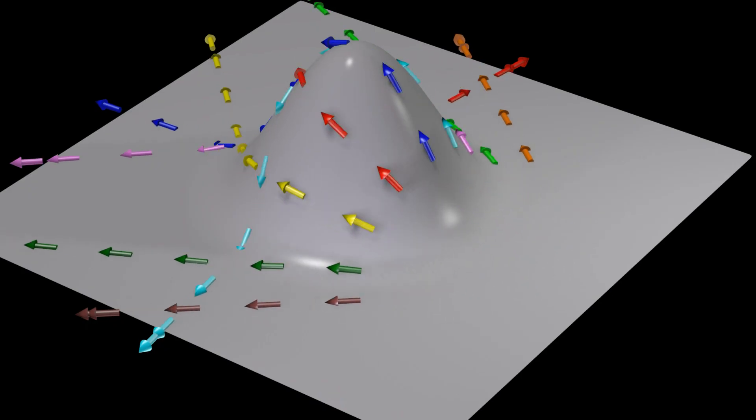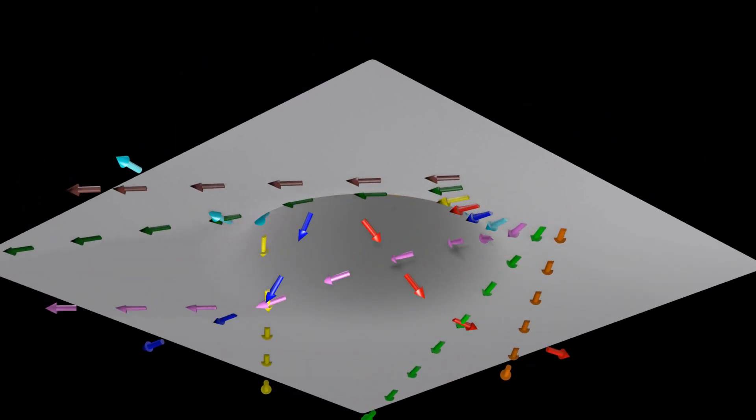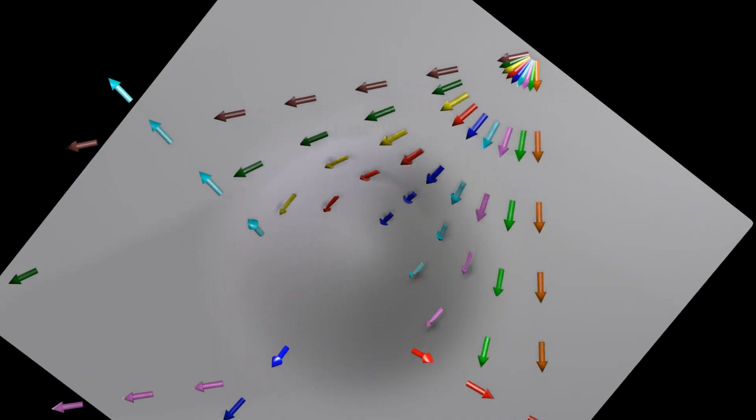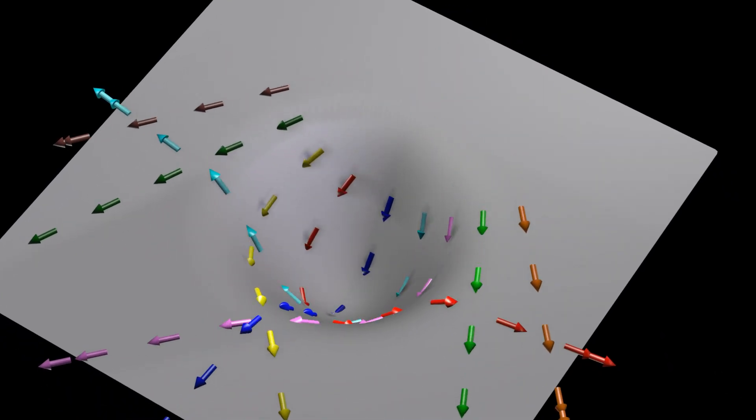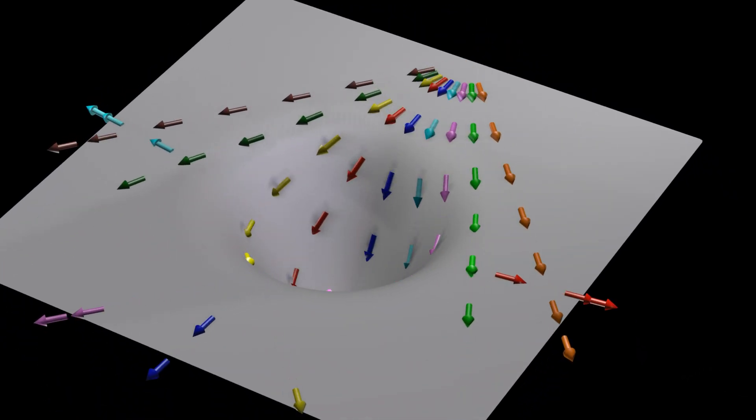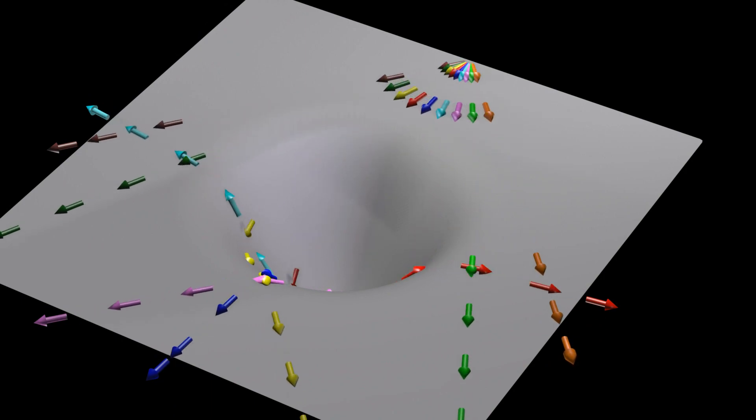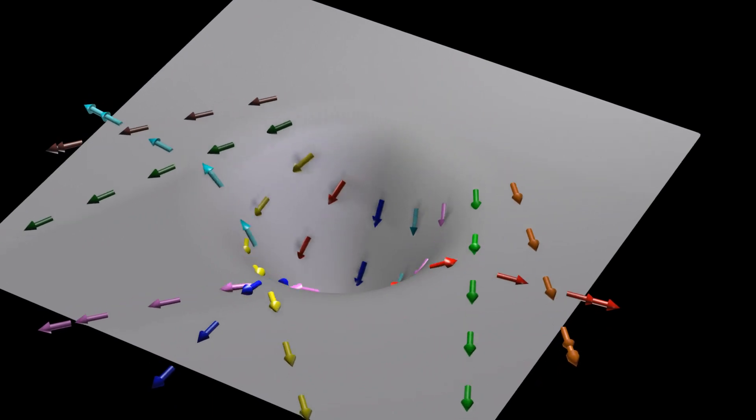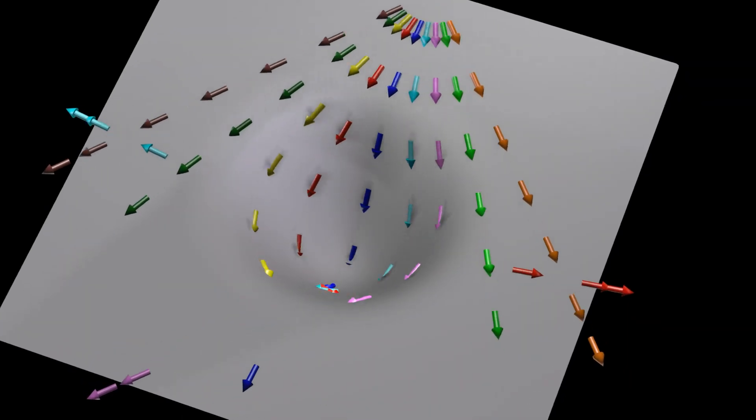Here, each color represents a different geodesic. In this first example, we are dealing with only a small amount of curvature. Here, each path is deflected by only a small amount.